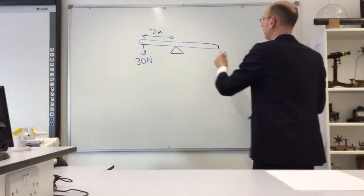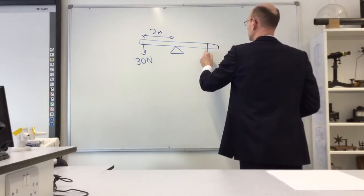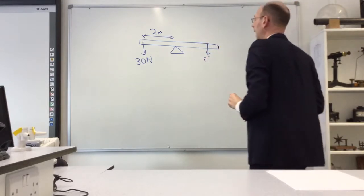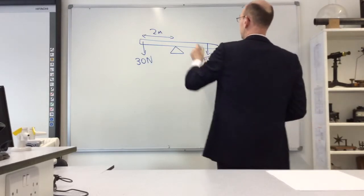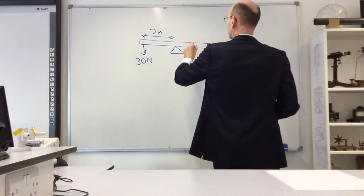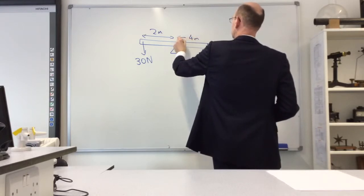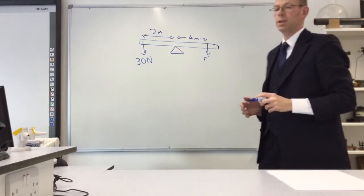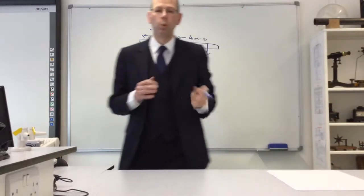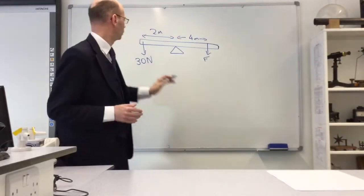On this side I've got an unknown force, which we'll call F, and let's say F is 4 meters away. The kind of question you might be asked is to work out the size of the force that balances that 30 newtons. So we apply the principle of moments.